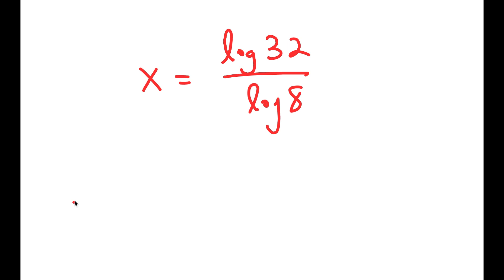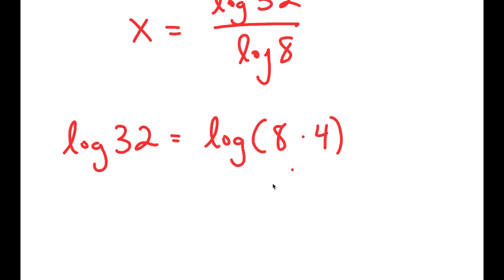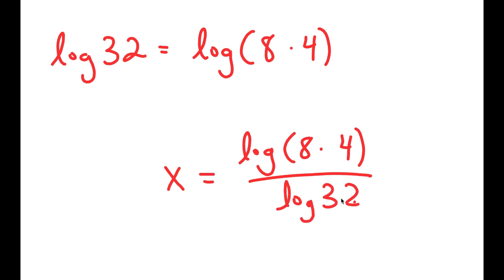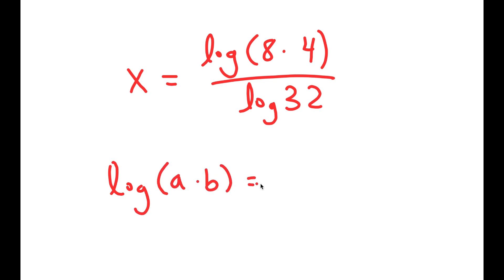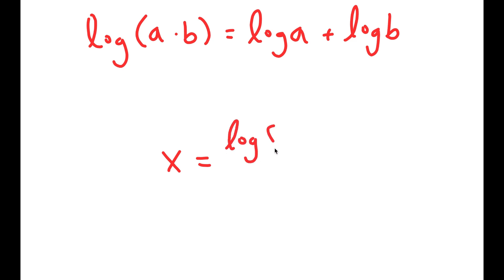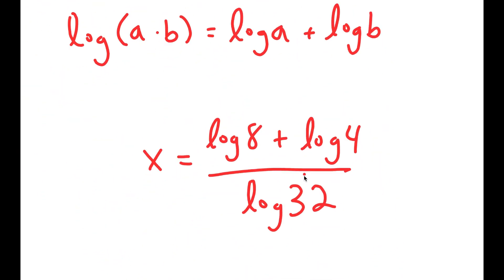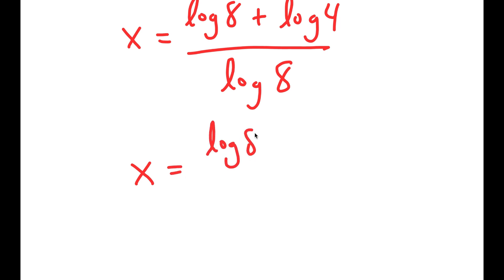Now, log of 32 is the same thing as log of 8 times 4. If I have something in the form log of a times b, this is equal to log a plus log b. So this becomes log of 8 plus log of 4, all over log of 8. This then splits into log 8 over log 8 plus log 4 over log 8.